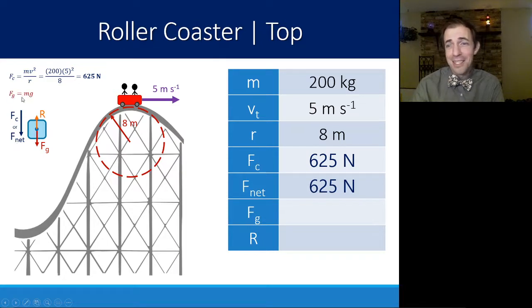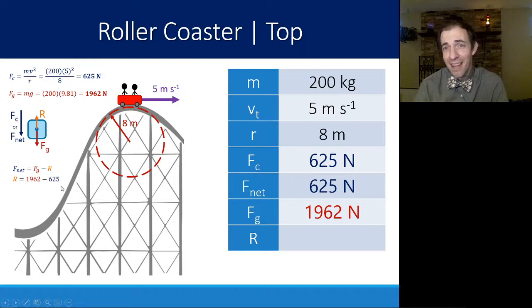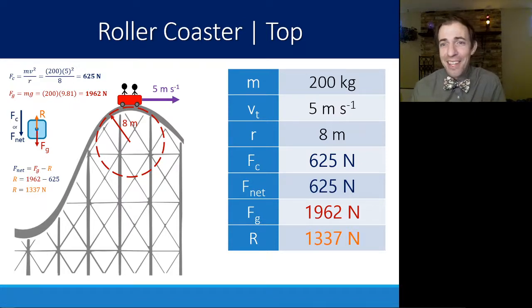I can find Fg. Fg is mass times gravity. 200 times 9.8 is 1,962. Same as it was in the last problem. It has not lost mass. So now if I want to find R, I just need to look at how do these interact to give me what R should be. Overall, I have a force of 625 going down. Gravity provides 1,962 of that, which means R has to counteract. So one way I can write that is Fnet is Fg minus R, or R would just be Fg minus Fnet. It's the difference between them, which would give me 1,337 newtons.